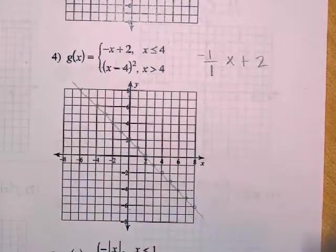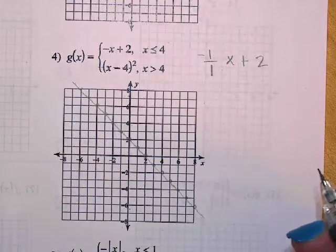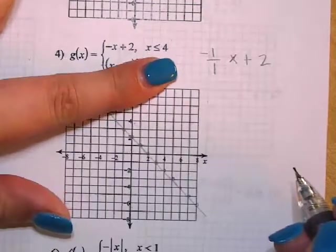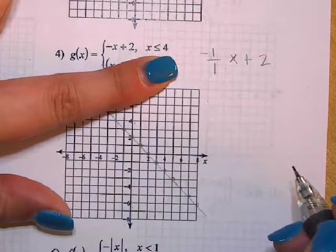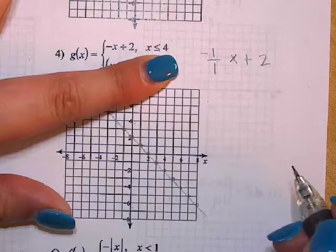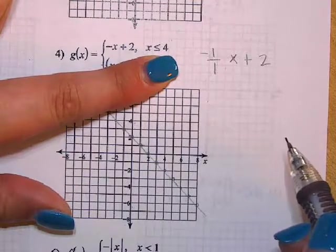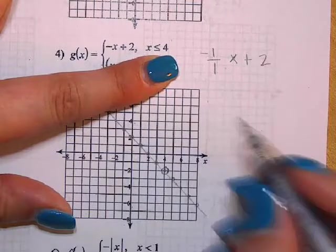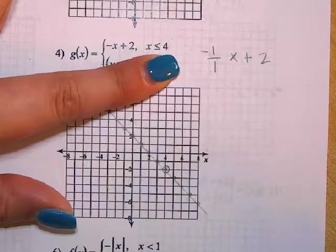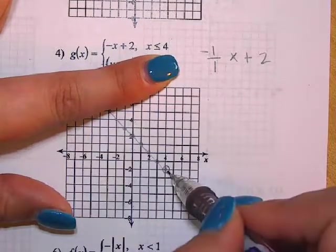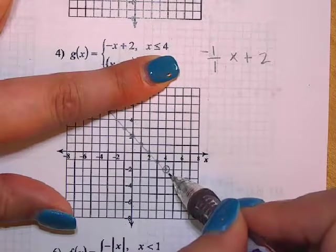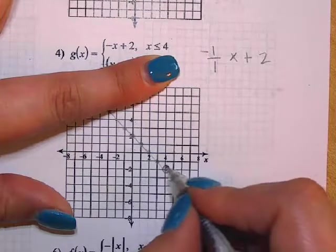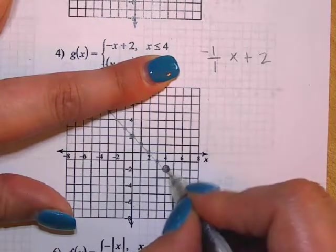And then what do I do from here? Not greater than or equal to. Less than or equal to. So we're going to find the place on the line where the x coordinate is four. And we're going to draw a circle around it. Do I fill that circle in or do I leave it open? I fill it in because it says equal to.